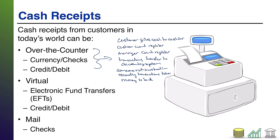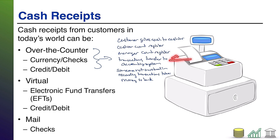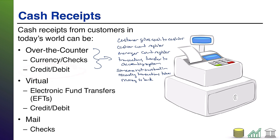When you have a check, it's typically written out to the business, so it's not going to do the cashier or manager any good to steal it, and it won't help them to fudge the numbers going into the system, because the check is written to the company. Unless they have authority on the company bank account, they probably can't cash that check. Credit and debit cards also keep things more secure because there's no physical cash or check to steal. The best someone can do is lift your card number and try to reuse it later.